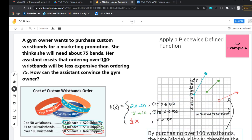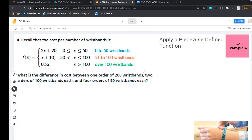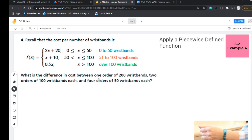And do you see how the maximum here is a lot smaller than over here? So then they go through and they actually give us the equation. So here's the same step function that I created. And it says, what is the difference in cost between one order of 200 wristbands, two orders of 100 wristbands, and four orders of 50 wristbands?